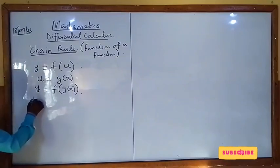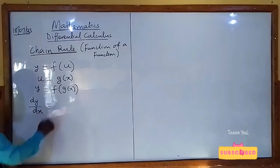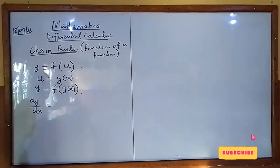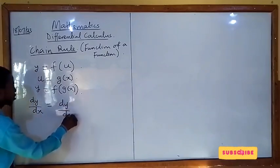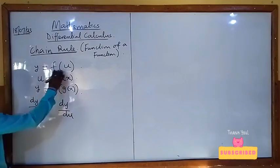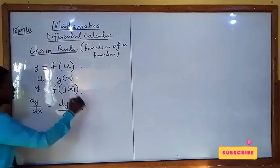dy/dx in this case, when we are finding the differential coefficient using chain rule, would be dy/du times du/dx. So we differentiate y with respect to u, then times du/dx.